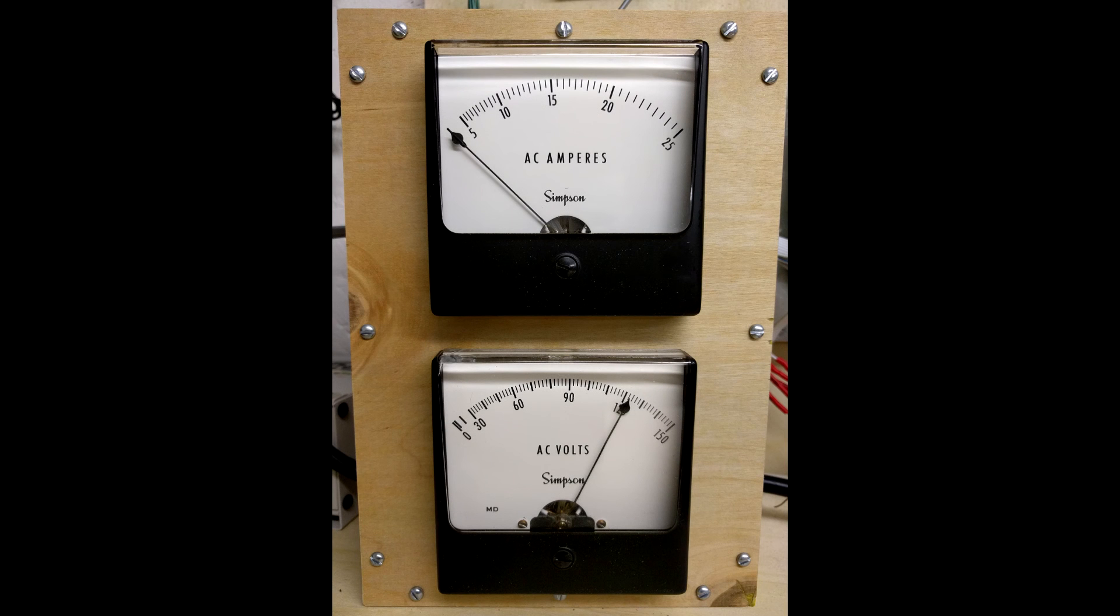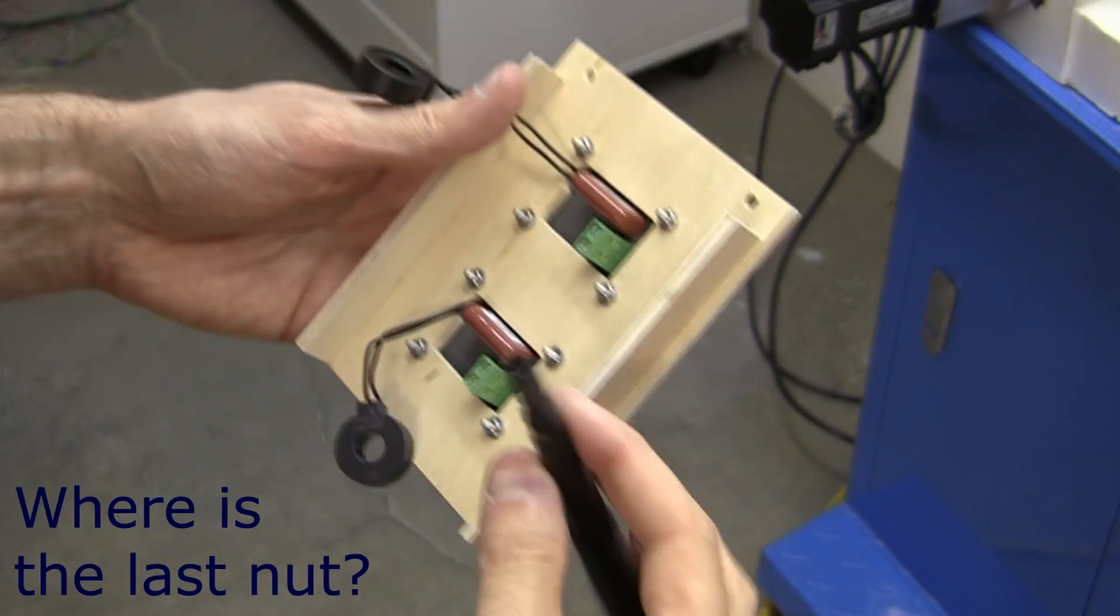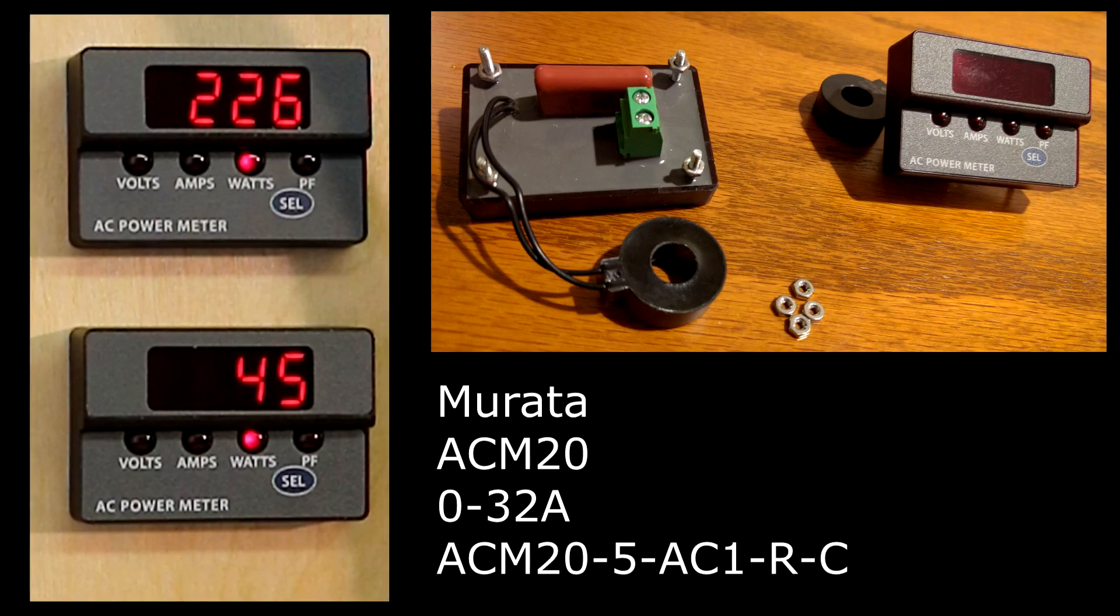While our previous meters behaved like a multimeter, where we measured current and voltage separate and multiplied them together to produce apparent power, our new meter is able to measure these phase plus actual power in terms of watts and power factor.